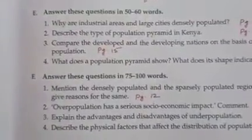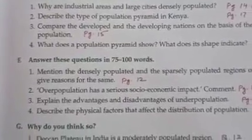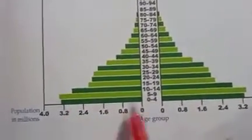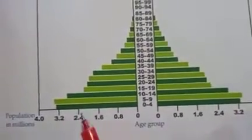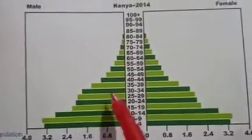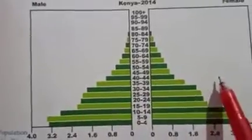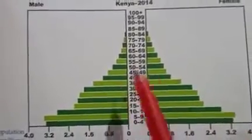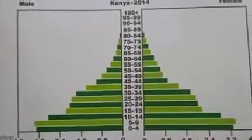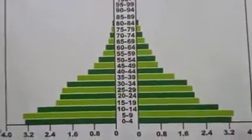Question number 2: describe the type of population pyramid in Kenya. Children, you need to describe this population pyramid. You can see that its bottom is broad, meaning the birth rate is higher. But as the age increases, the shape of the pyramid tapers and becomes very narrow, meaning the death rate is very high. For both male and female, the death rate is very high because the top part of this pyramid is tapering. You have to write this answer in your own words.